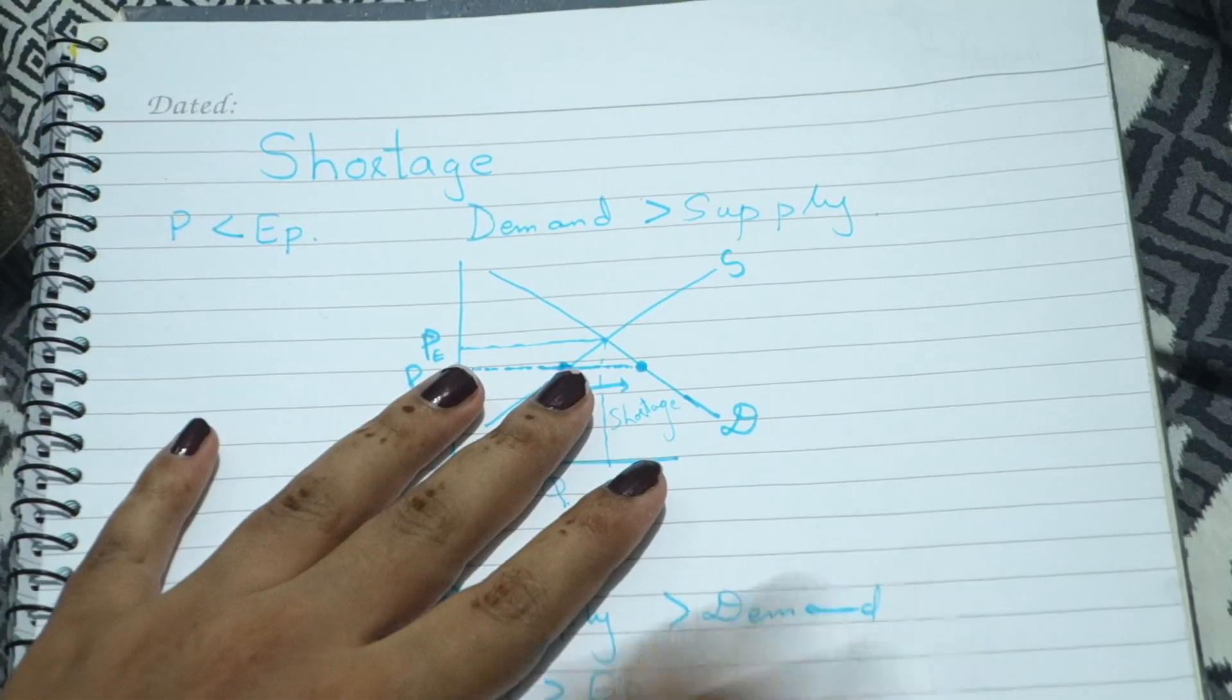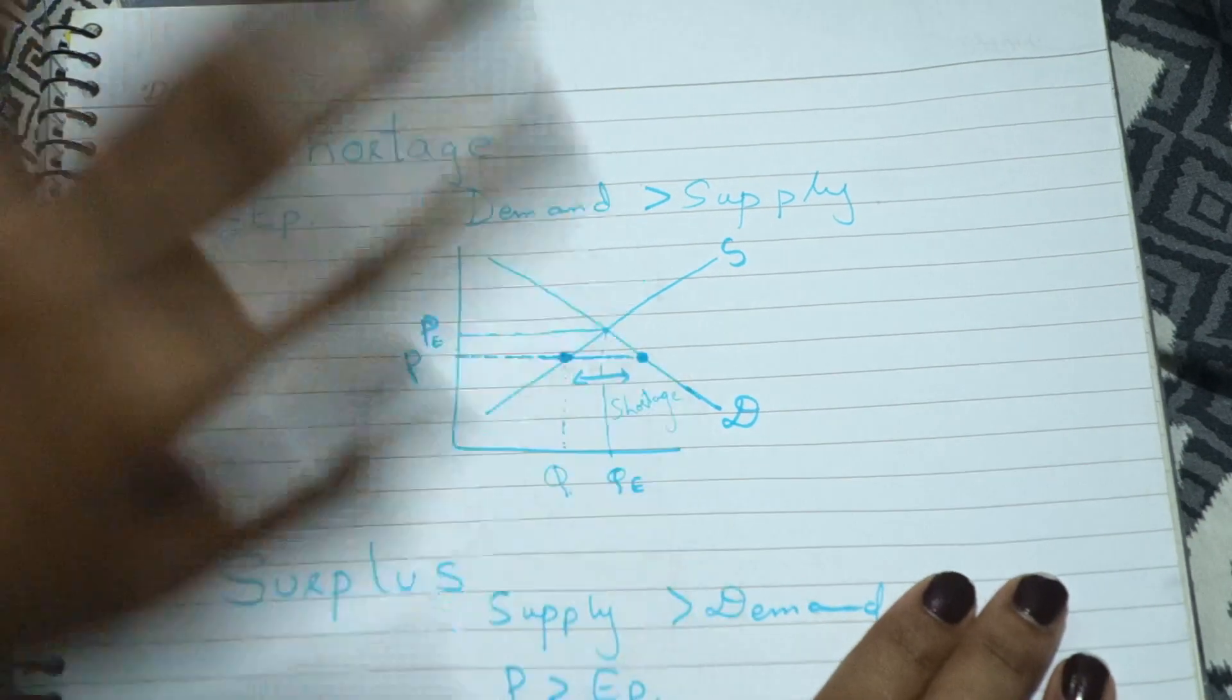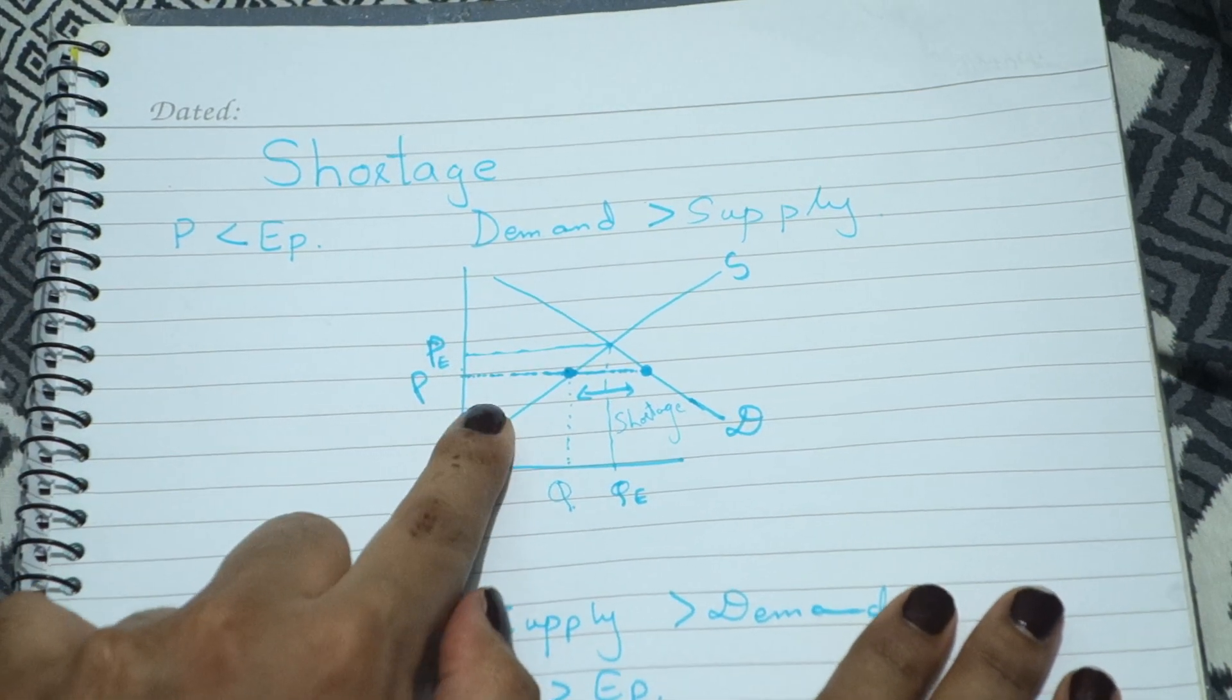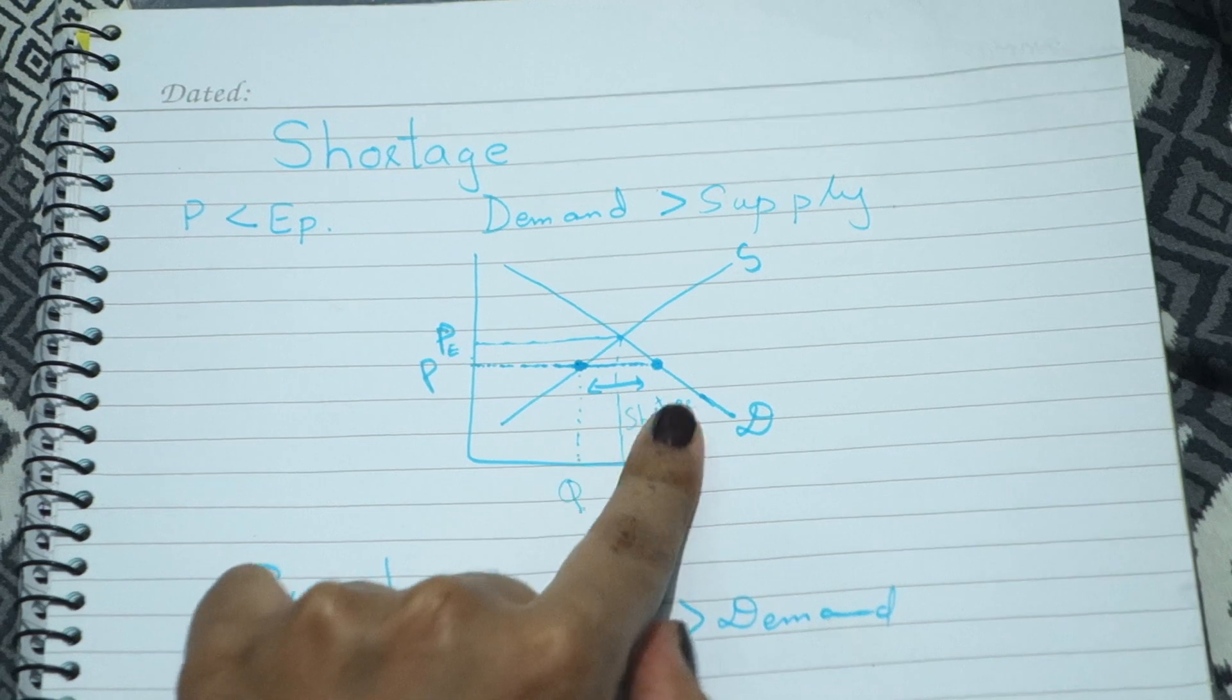Obviously shortage, as in products kam hoti hain. Ye usually tab hoti hai jab aapki price equilibrium price se kam rakhi jaye. Tab aapki shortage aajati hai.